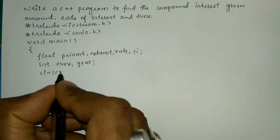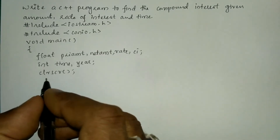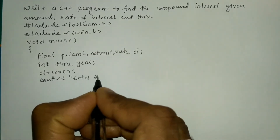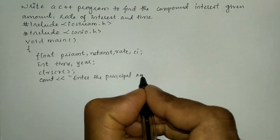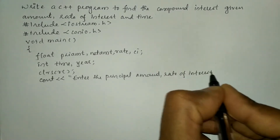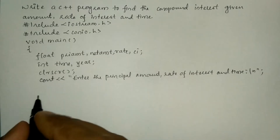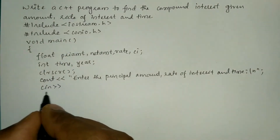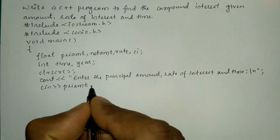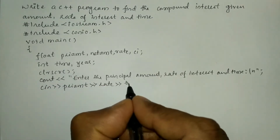Now we are going to write the clrscr() function, which is used to clear the screen. We will ask the user to enter the principal amount, rate of interest, and time using a cout stream with a newline. Then we receive the user's input from the keyboard using the cin stream with the extraction operator for the variables: pri_amt, rate, and time.